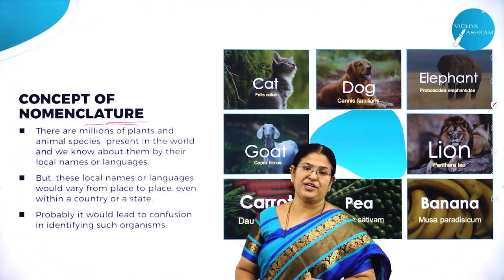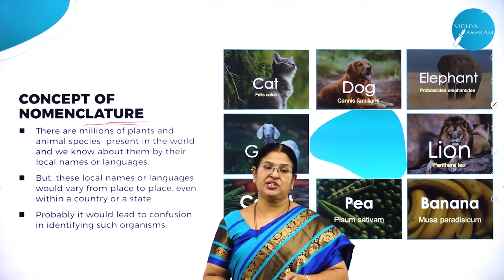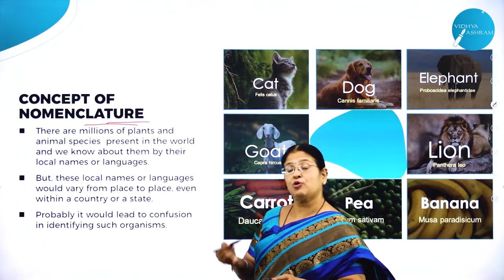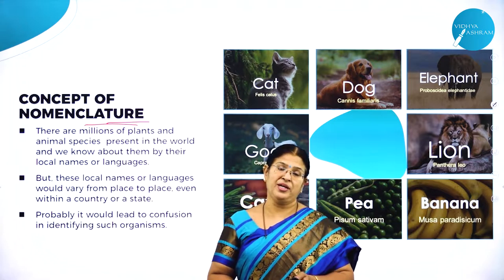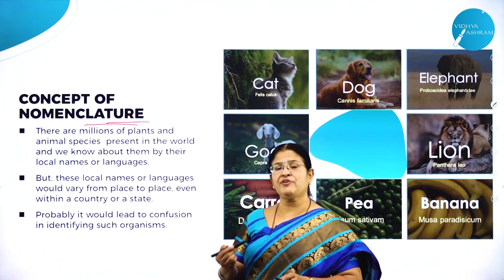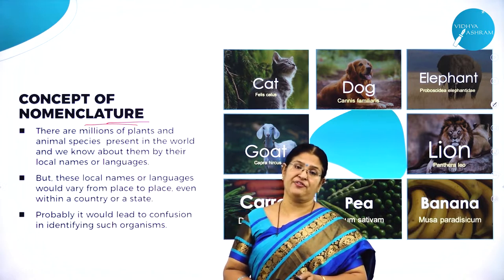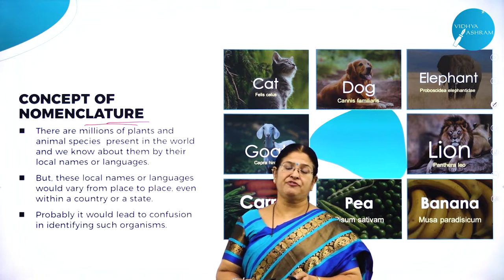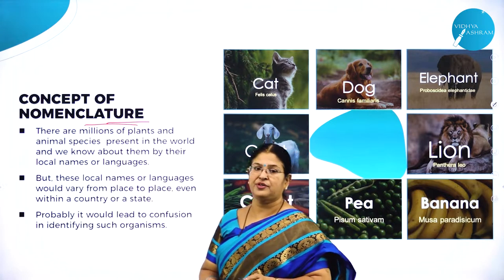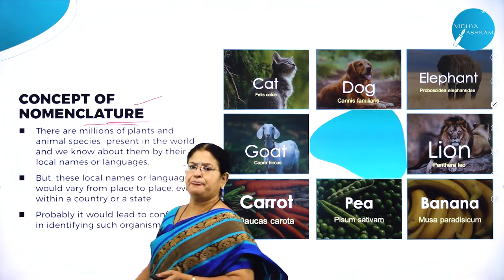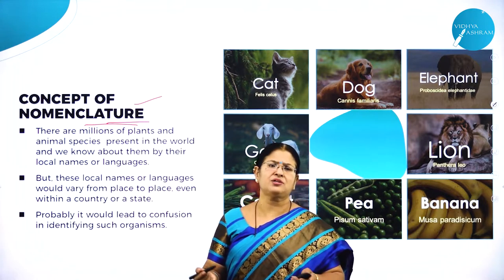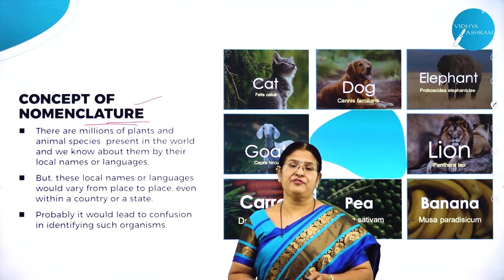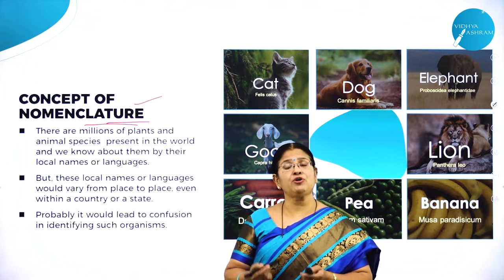In today's session we are going to study about nomenclature, then binomial nomenclature, the rules of binomial nomenclature, how we give scientific names, and who approves the scientific names for plants and animals. Don't we find there are millions of plants and animals existing on this planet Earth?